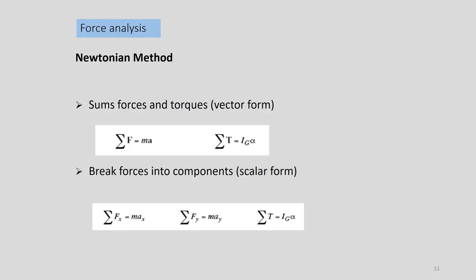Dynamic force analysis can be done by several methods. The one that gives the most information about forces internal to the mechanism requires only Newton's law, called the Newtonian method. In this method, we write down the summation of all forces and torques in the system. It is also convenient to separate the summation of forces into x and y components. For a single link in pure rotation or pure translation, the Newtonian method is very convenient. For more than one link, it is better to use matrix form, which will be discussed later in the video series.